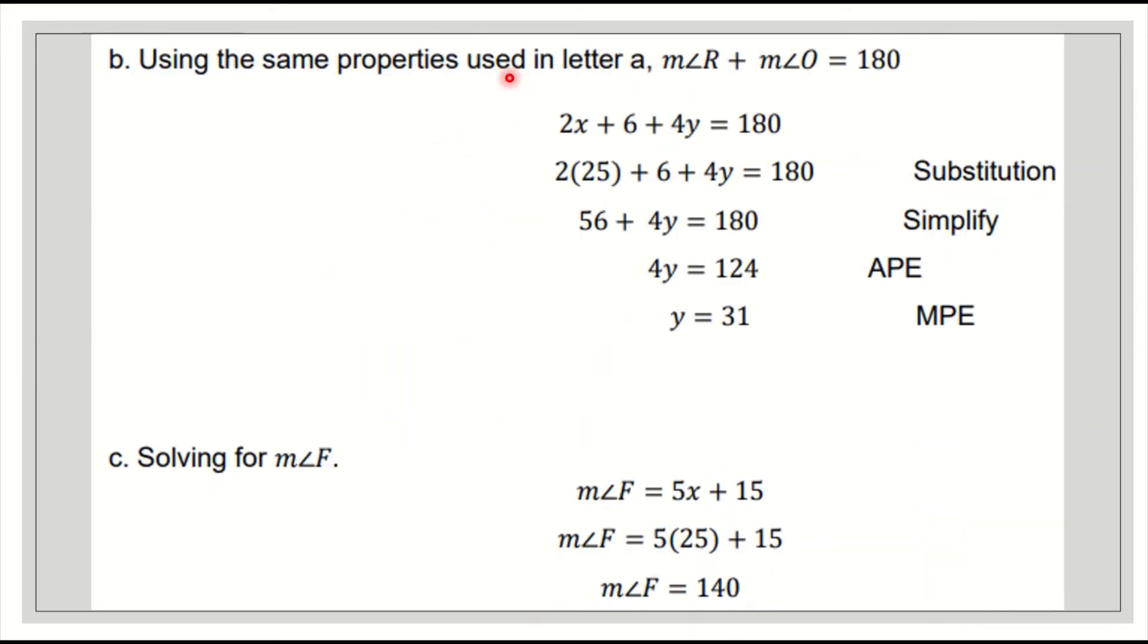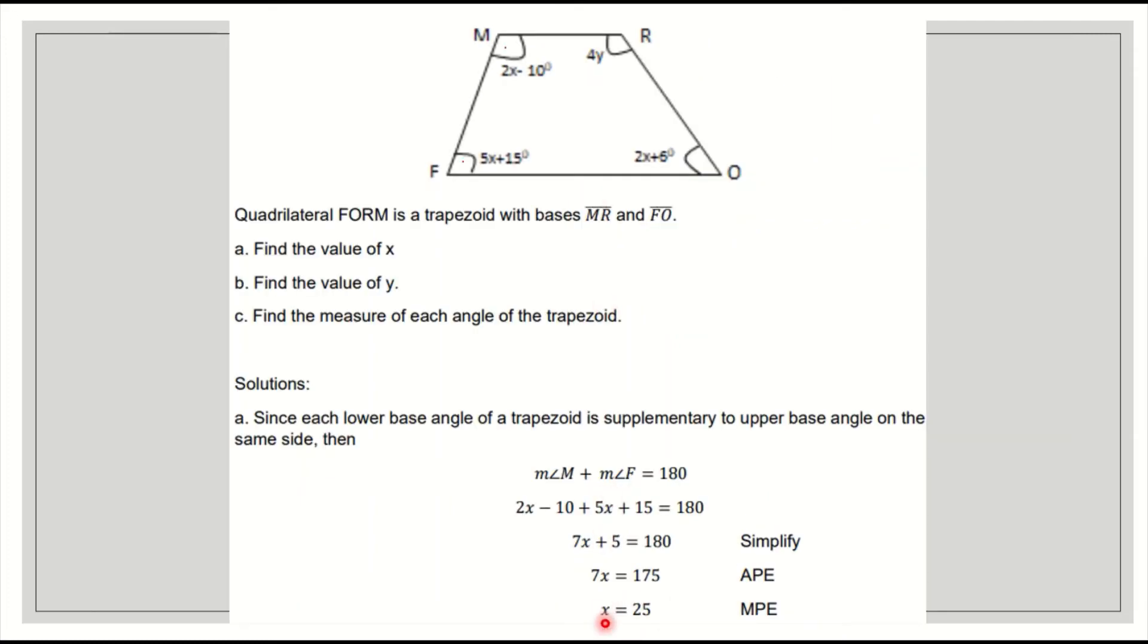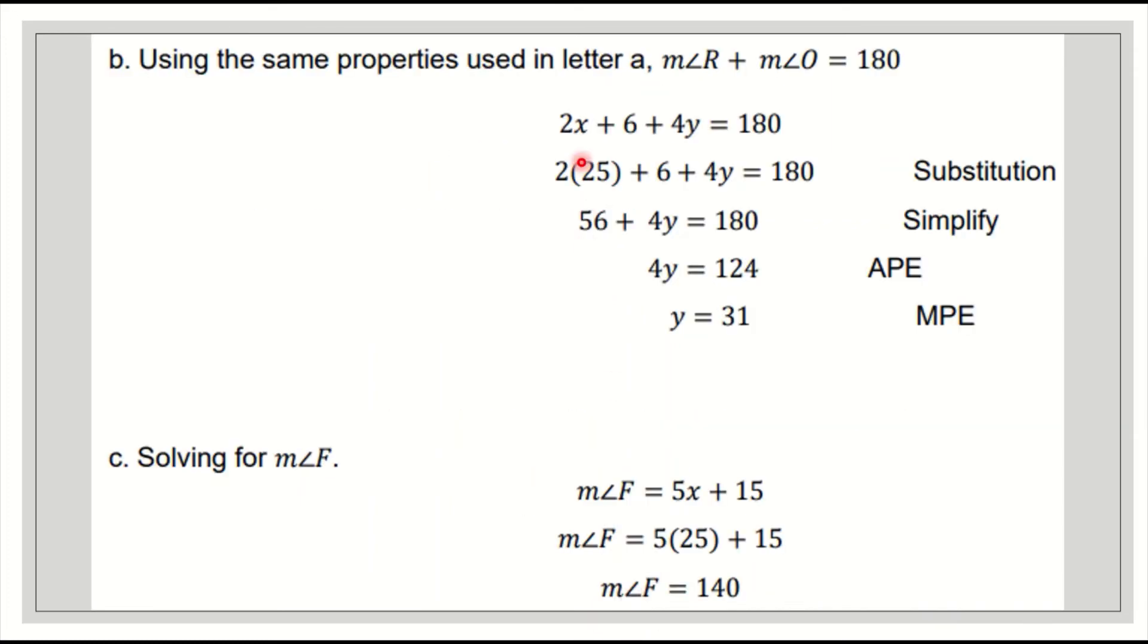Using the same properties used in letter A, measure of angle R plus measure of angle O is equal to 180. So 2x plus 6 plus 4y is equal to 180. We're going to use the value of x we found earlier, which is 25. So 2 times 25 plus 6 plus 4y is equal to 180. 2 times 25 is 50, plus 6 is 56. Then transpose, 180 minus 56 becomes 124. Divide both sides by 4, this will become 31. So the value of y is 31.